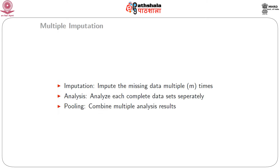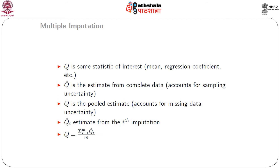Rubin in 1987 conceived a method known as multiple imputation. Multiple imputation is a Monte Carlo technique whereby the imputation is made not once but multiple number of times — in general m times, and typically m is taken between 3 to 10. We can think of multiple imputation as a 3-step process: first, imputation, where the missing entries are imputed; then analysis, where each imputed complete data set is analyzed, resulting in m complete data sets; finally, pooling, where the m analysis results are combined into a final estimate.